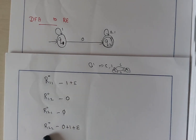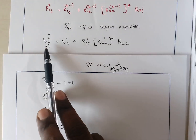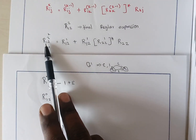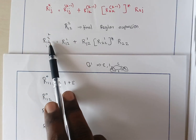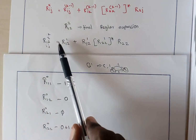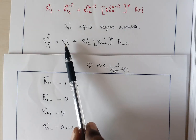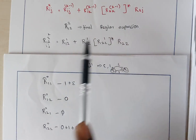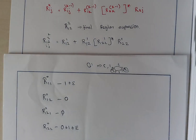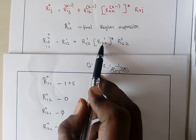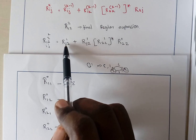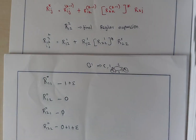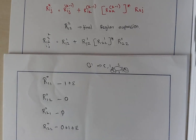We have now found all 0 intermediate node values. In the final regular expression we need R12 of 2, where the starting node is 1, the final node is 2, and K is 2. To find this, we first need R12 of 1 and R22 of 1. To find those with 1 as intermediate node, we need the 0 intermediate node conditions — which we have already found for all possible combinations.